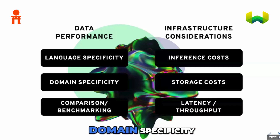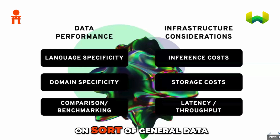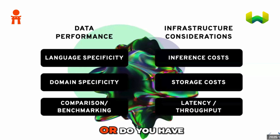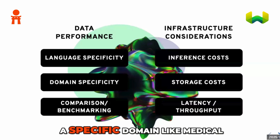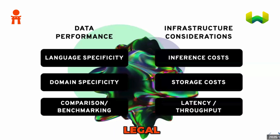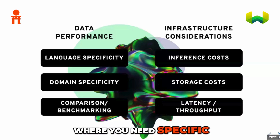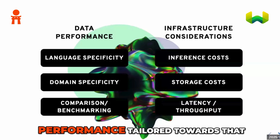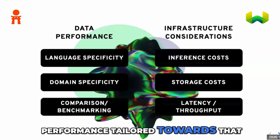The second subcategory is domain specificity. Are you using this on general data, or do you have a specific domain like medical, legal, or e-commerce, where you need specific performance tailored towards that?